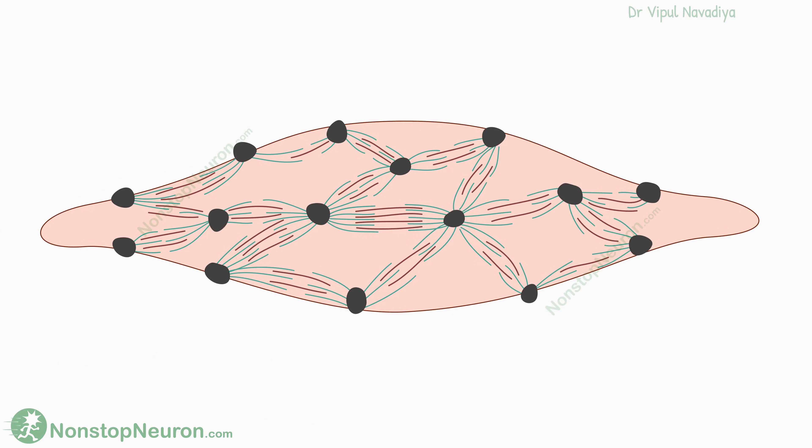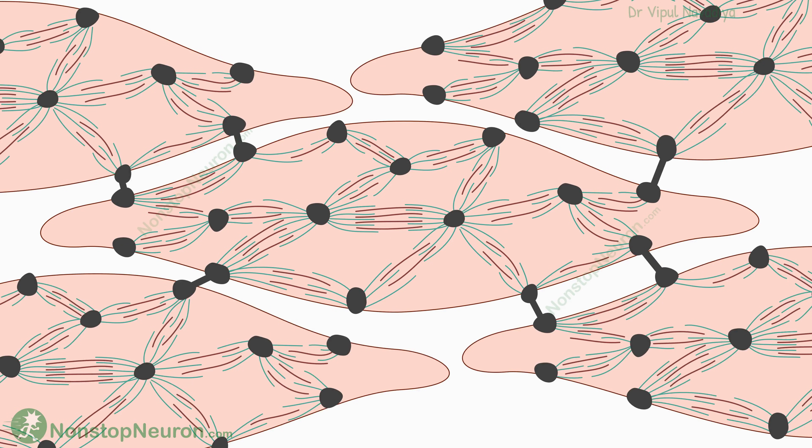Some of the membrane-bound dense bodies may be attached to the adjacent fiber. This allows force generated by one fiber to be transmitted to the neighboring fibers as well. So this was inside an individual smooth muscle fiber.